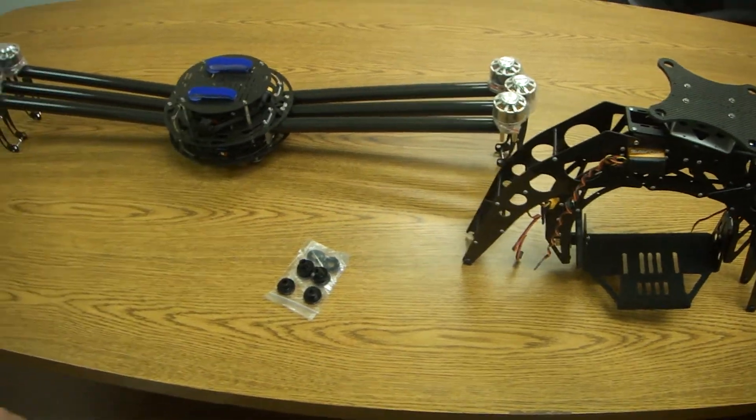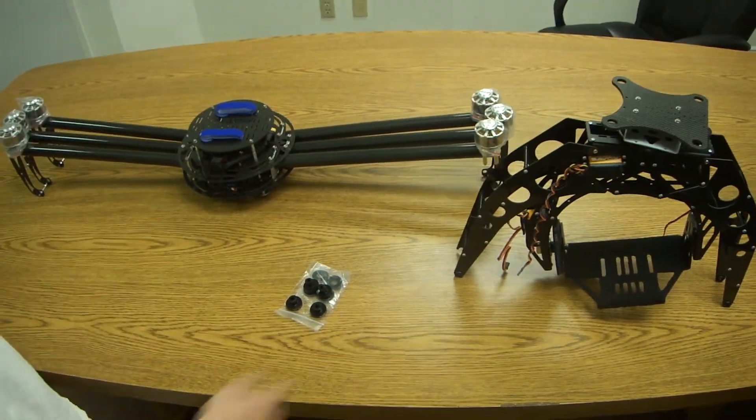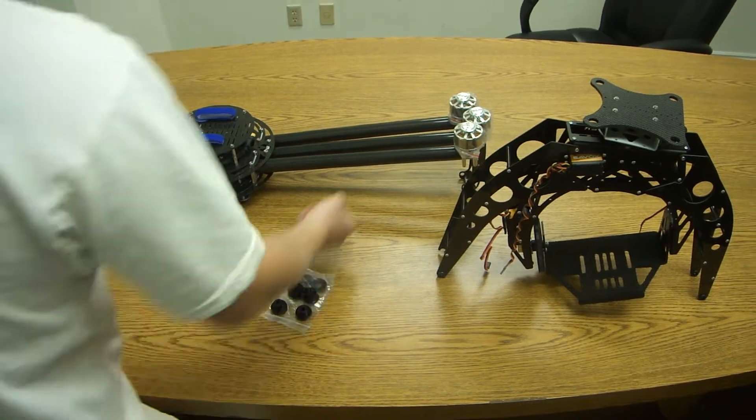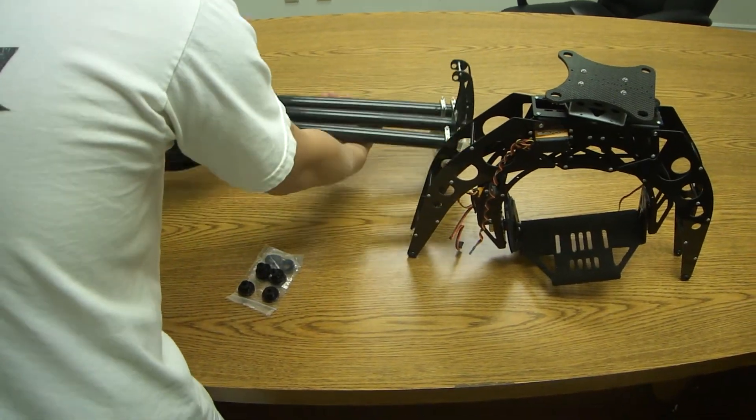Alright, this is going to be a quick tutorial on how to attach your Cinewing 6 to your AV200. First, you're going to start off by grabbing your Cinewing 6 and you're going to turn it upside down.